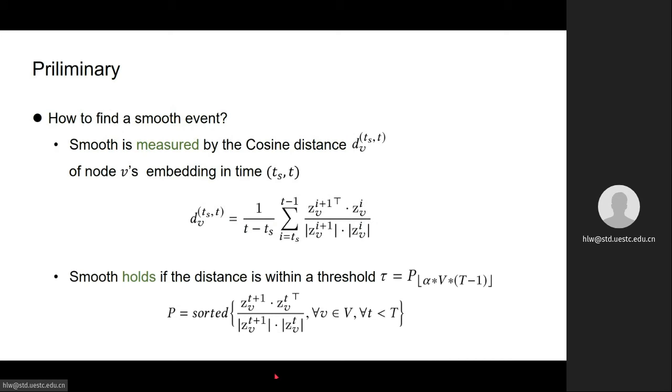And we say a subsequence is smooth if this distance is within some threshold tau, and tau is defined in the equation below.